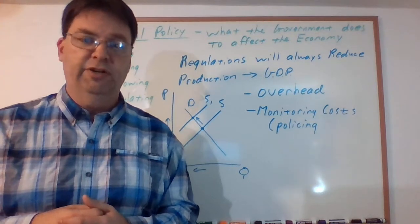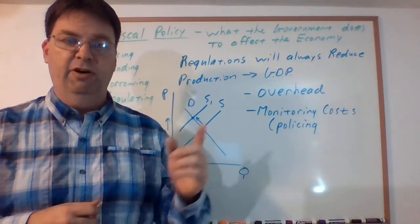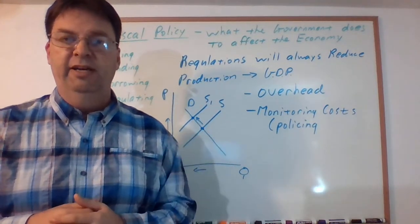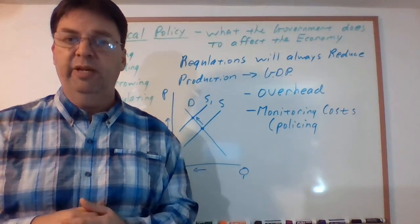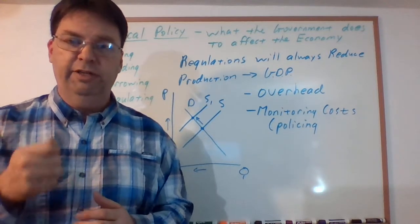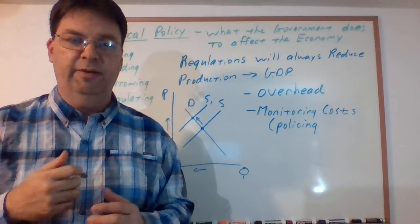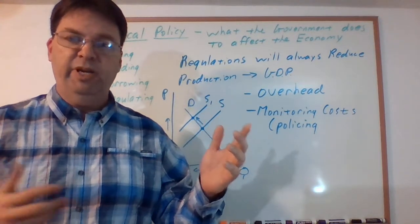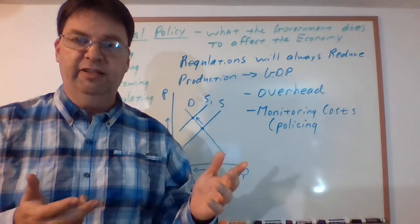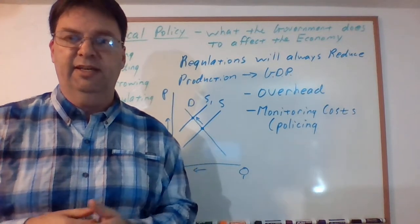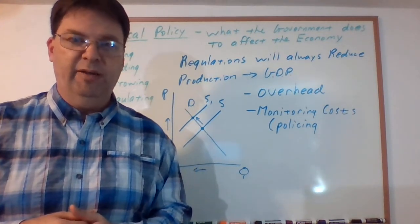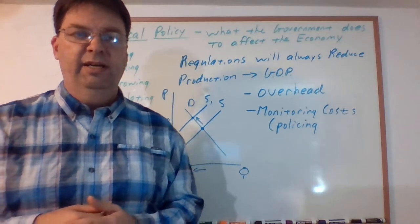So your overhead just to get the job done minimum is probably like 20 percent. So for every dollar you spend trying to monitor some environmental problem, 20 percent of it is just going to heating the building and turning on the lights and things like that. It's not actually accomplishing the cost.